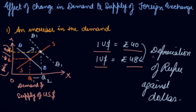Before you used to pay only rupees 40 to get $1, but now you are paying more to get $1, which means your value of rupee has reduced — so it is the depreciation of rupee against dollar. In the same way, if your US dollar demand decreased, your exchange rate will reduce and there will be an appreciation of rupee.